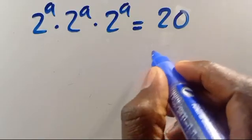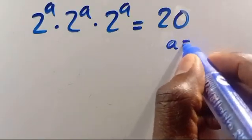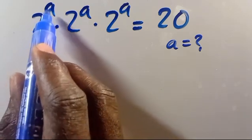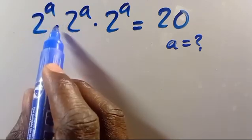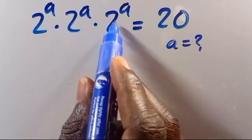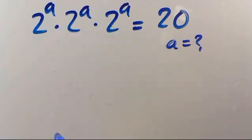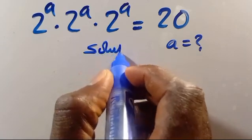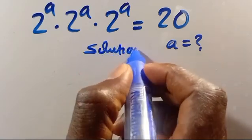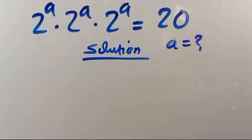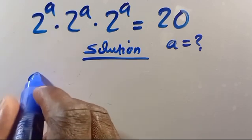What is the value of A? Given that we have 2 to the power of A times 2 to the power of A times 2 to the power of A equals 20. Let's move to the solution.